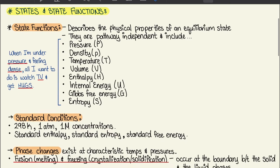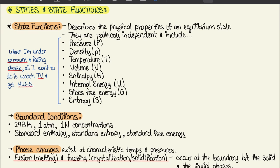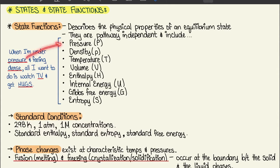Moving on to 7.2: states and state functions. State functions describe the physical properties of an equilibrium state and are pathway independent. They include pressure, density, temperature, volume, enthalpy, internal energy, Gibbs free energy, and entropy. The mnemonic for this is: 'When I'm under pressure and feeling dense, all I want to do is watch TV and get hugs.'